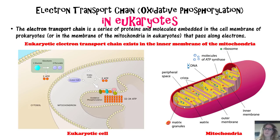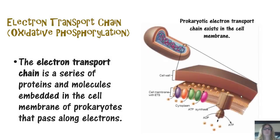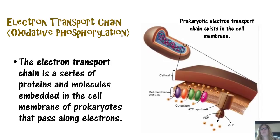The electron transport chain is a series of proteins and molecules embedded in the cell membrane of prokaryotes or in the membrane of mitochondria in eukaryotes, and they pass along electrons. The eukaryotic electron transport chain exists in the inner membrane of the mitochondria. You can visualize the inner and outer membranes of the mitochondria in the diagram. The prokaryotic electron transport chain exists in the cell membrane.